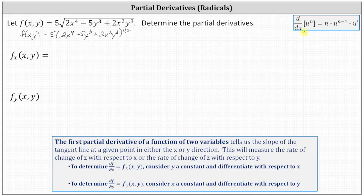However, in this case, u prime will be a partial derivative. So again, to find the partial of f with respect to x, we differentiate f with respect to x, treating y as a constant.